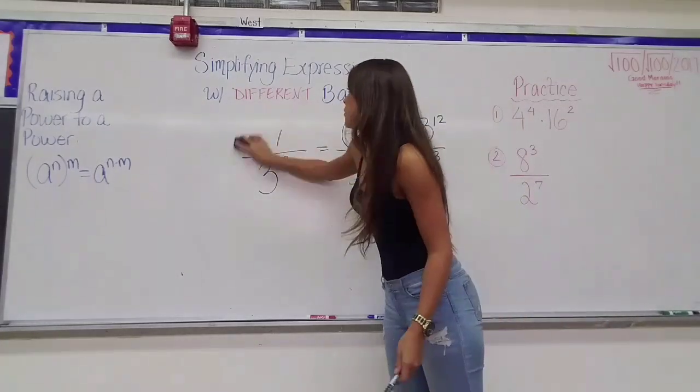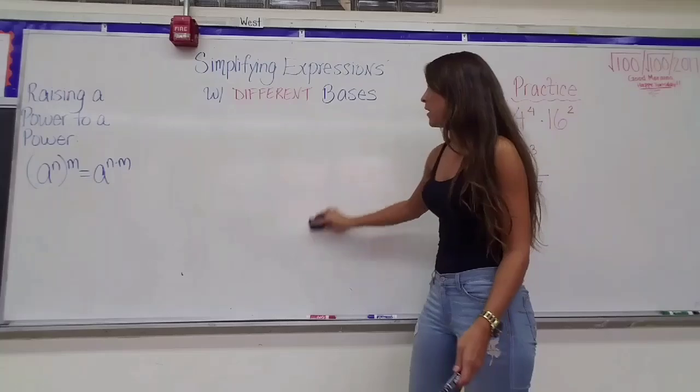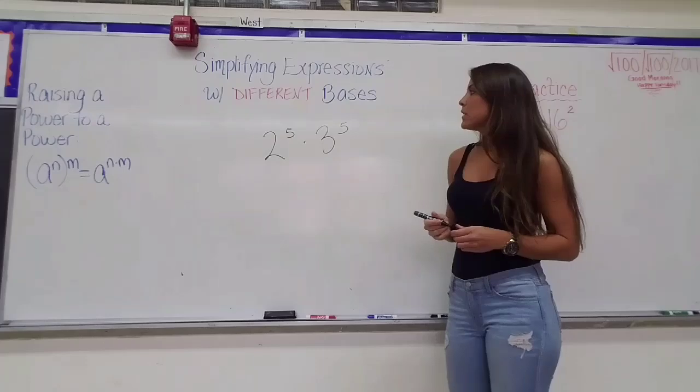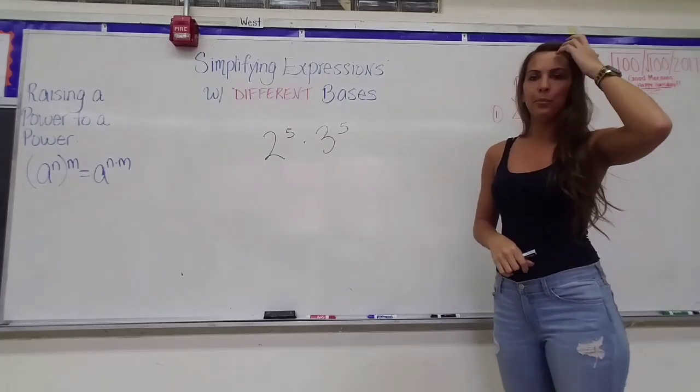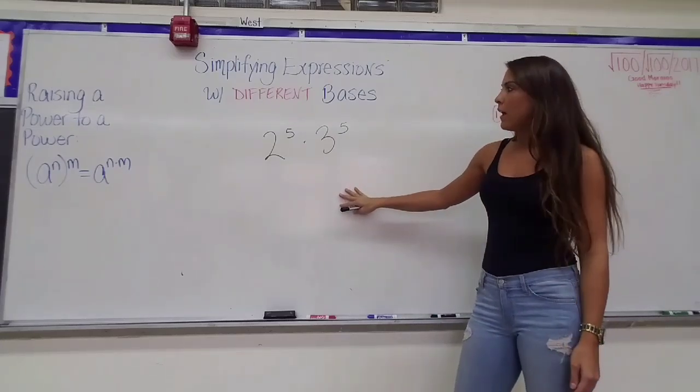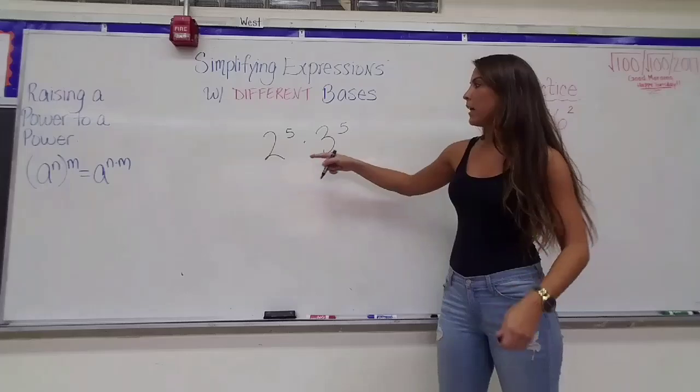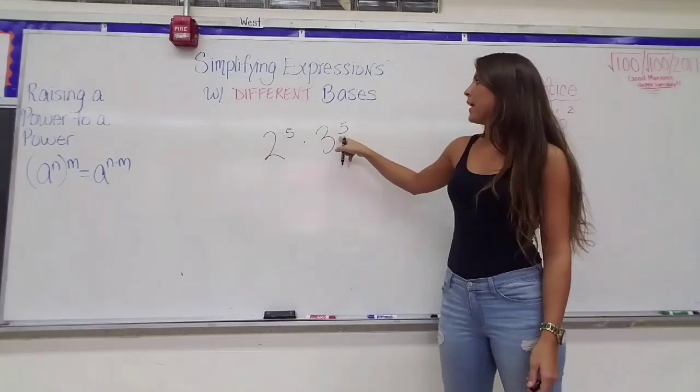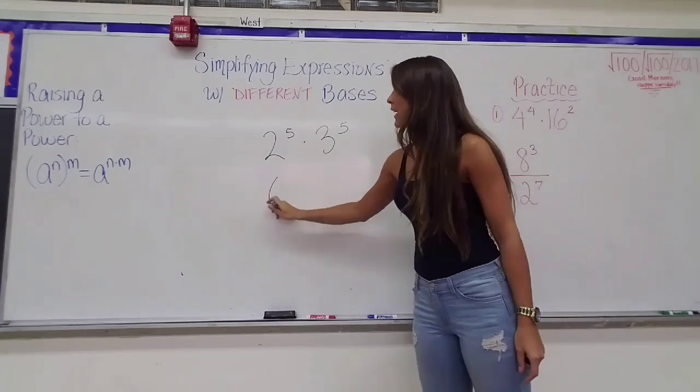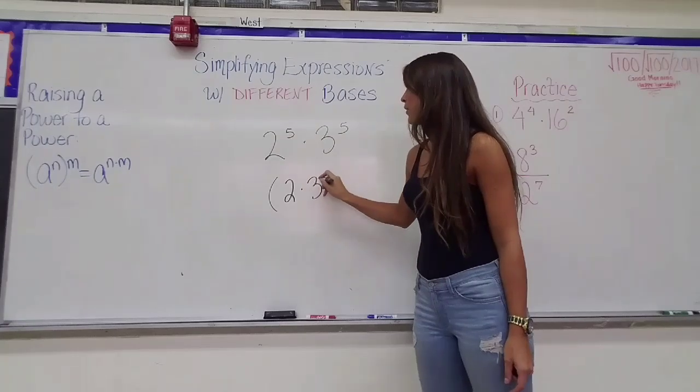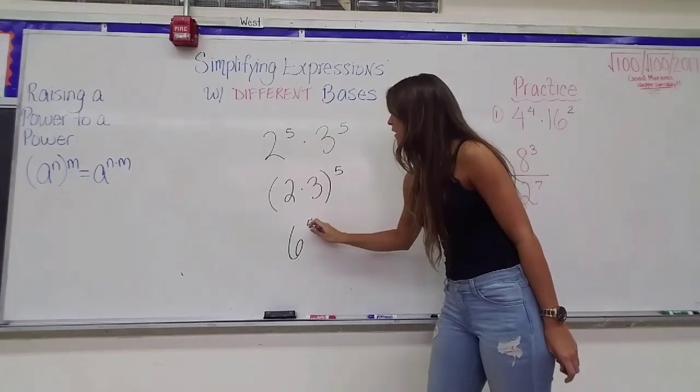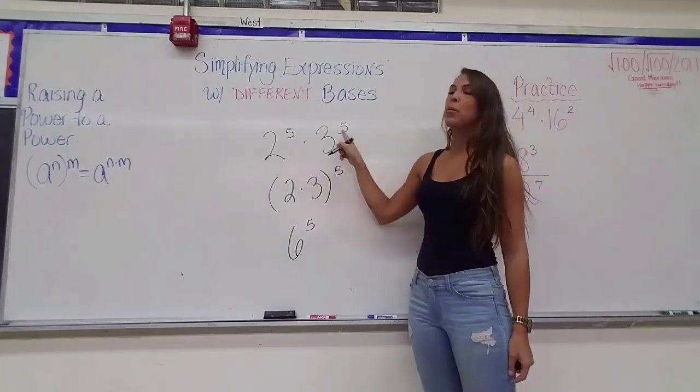One other thing that you can do if the bases are not the same, let's say I had 2 to the 5th power being multiplied by 3 to the 5th power. Do you see what the problem is going to be if I try to change one of these bases? I can't write 3 as a power of 2, and I certainly can't write 2 as a power of 3. But there is something nice in this problem that grants me an exception. See how they have the same exponents? Because they have the same exponents, even though I can't rewrite 3 as 2 to the something, what I can do is I can actually multiply these bases, 2 times 3, and raise their product to the 5th power.